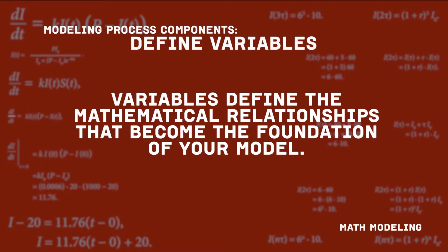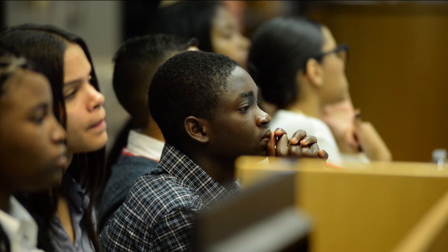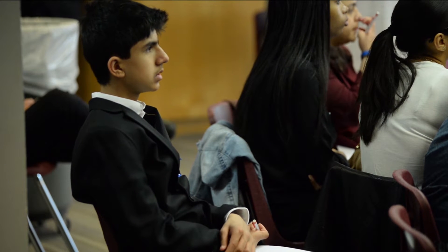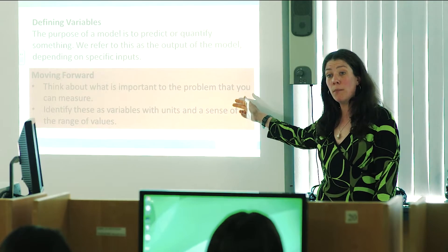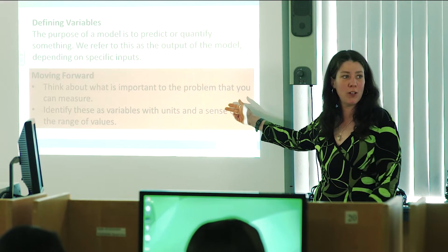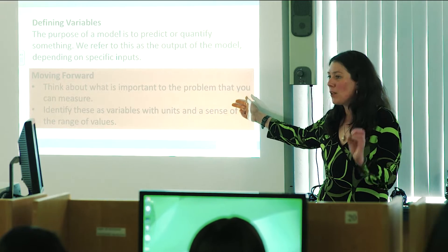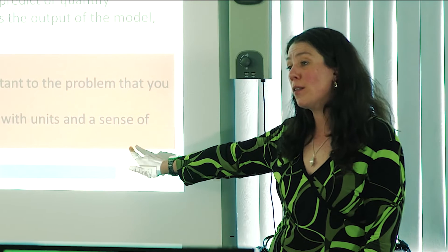It's time to think about the primary factors affecting the phenomenon you're solving for — like variables and specific units. This component of modeling creates mathematical relationships that become the foundation of your model. Think about what the output of your model is — what you can include and measure. There are things you might know are important but can't get data on, so you set those as parameters and move forward with what you can get. Think carefully about your units.